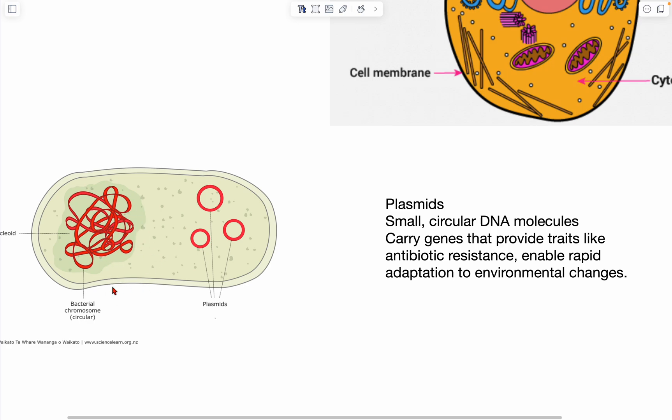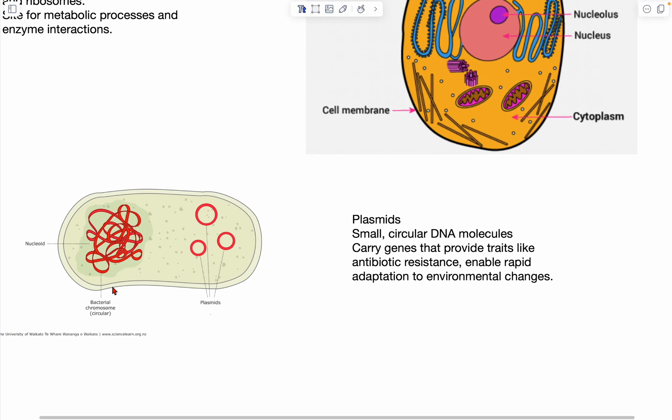And plasmids basically carry genes that provide certain traits, such as, as previously discussed, antibiotic resistance or the ability to just metabolize certain substances, which aren't usually found in a cytoplasm. Also, another thing is that plasmids replicate independently of the chromosome.